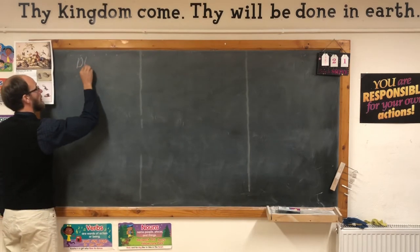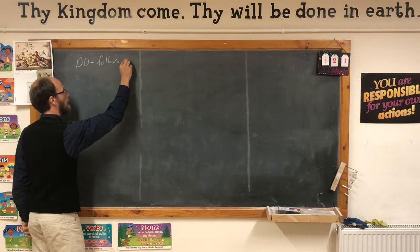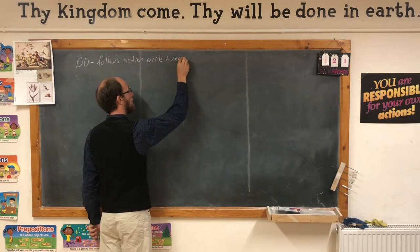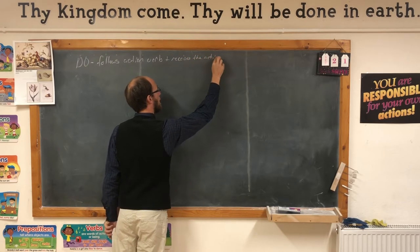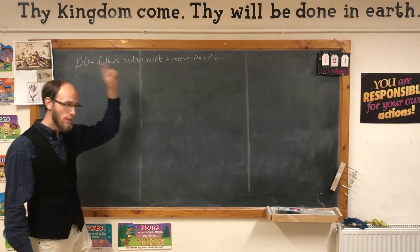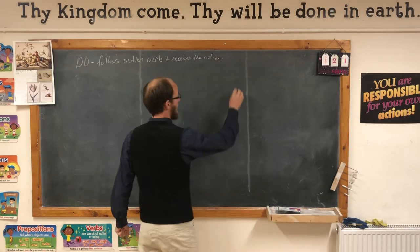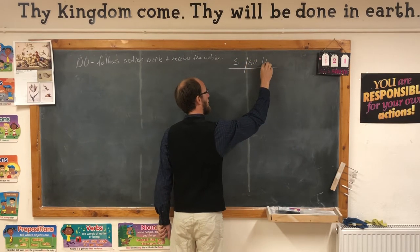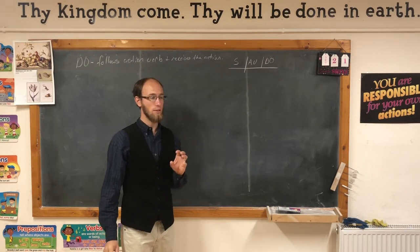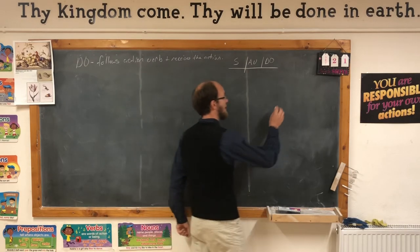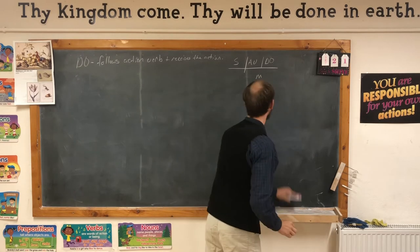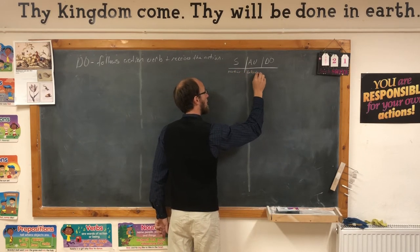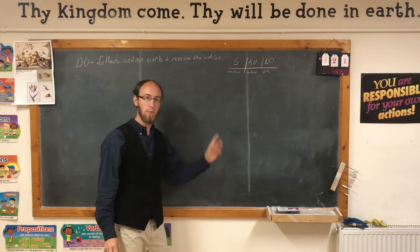A direct object follows an action verb and receives the action. It is diagrammed as: subject, action verb, direct object. The kernel sentence I use for that is: mother baked a pie. The pie receives the action of being baked.